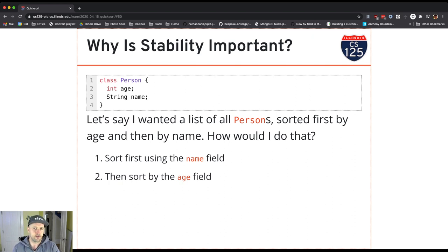If I use an unstable sort, that'll happen. And so I can't use this approach to sort by multiple keys.